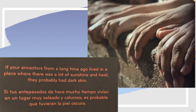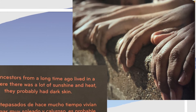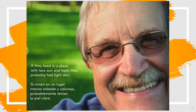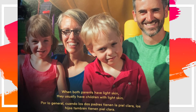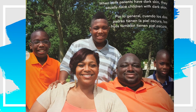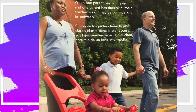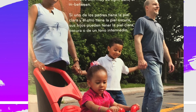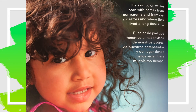If your ancestors from a long time ago lived in a place where there was a lot of sunshine and heat, they probably had dark skin. If they lived in a place with less sun and heat, they probably had light skin. When both parents have light skin, they usually have children with light skin. When both parents have dark skin, they usually have children with dark skin. When one parent has light skin and one parent has dark skin, their children's skin may be light, dark, or in between. The skin color we are born with comes from our parents and from our ancestors and where they lived a long time ago.